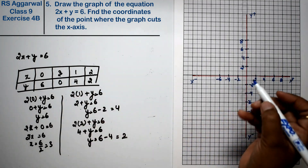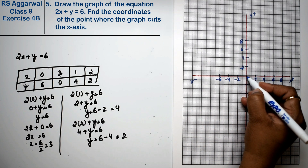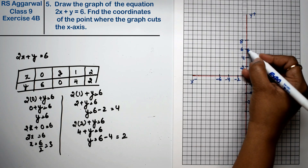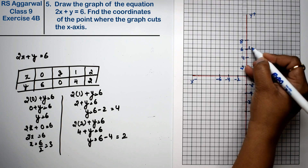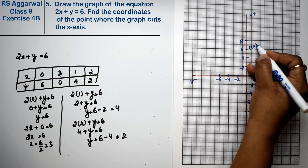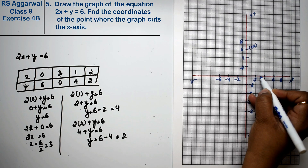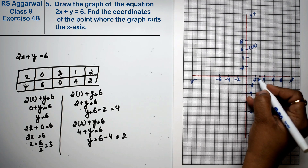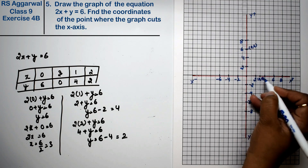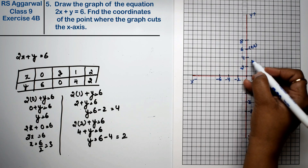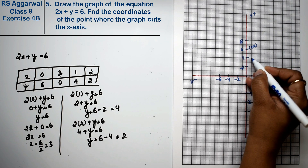Now see, the first point: x is 0 and y is 6. That gives us the point (0, 6). Next, x is 3 and y is 0 — that is the point (3, 0). Next, x is 1, y is 4 — that is the point (1, 4).